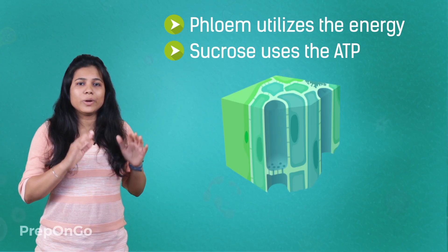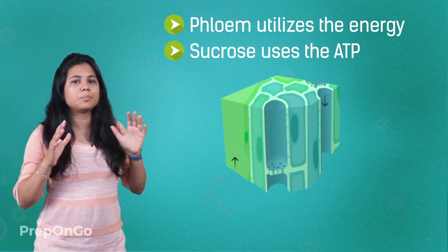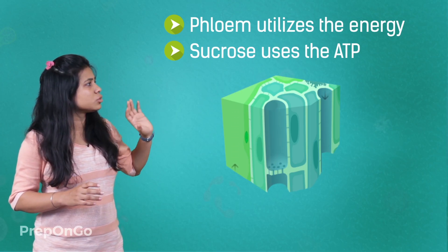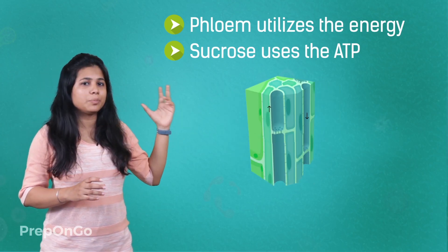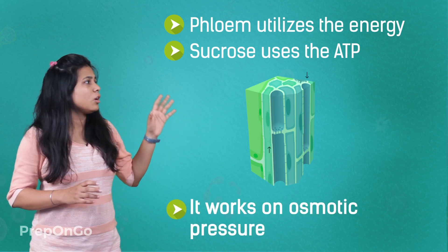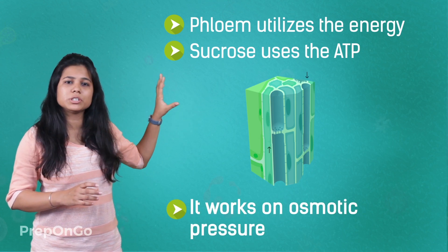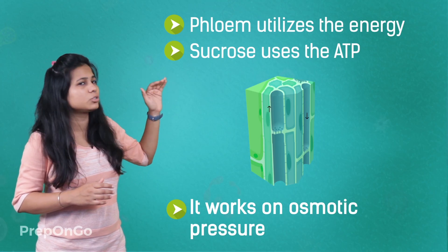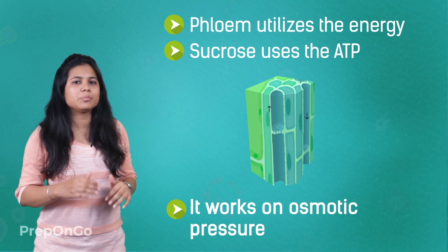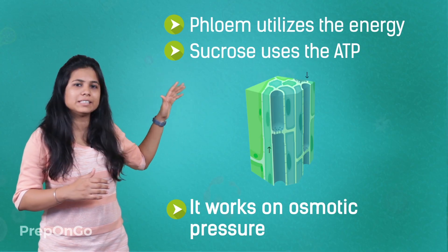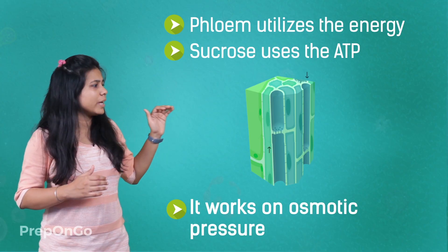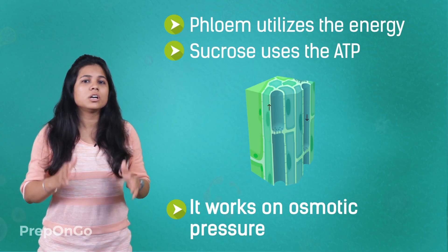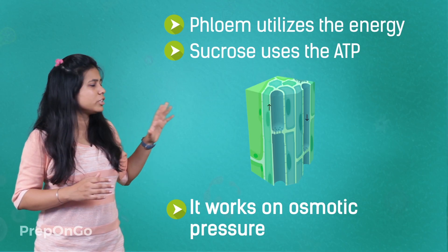When sucrose is inside the phloem, the pressure inside the phloem tissue is more — this is osmotic pressure. This leads water to move in. Since the pressure in the phloem is high, it lessens its pressure by removing food particles to other tissue, passing on its food to release pressure. In this way, it transfers food materials to different tissues and different parts of the plant.